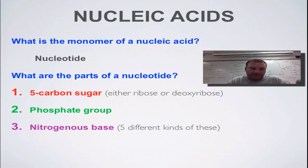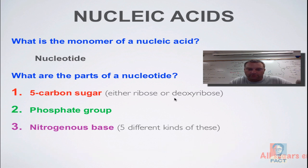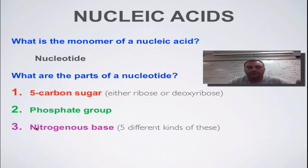What is the monomer of a nucleic acid? It's called a nucleotide. A nucleotide has three parts: a five-carbon sugar—either ribose or deoxyribose depending on if it's RNA or DNA; a phosphate group which has phosphorus in it; and a nitrogenous base. A base has a pH above 7 and contains a lot of nitrogen, hence the name nitrogenous base.